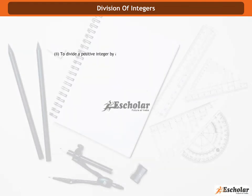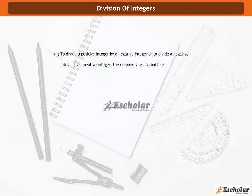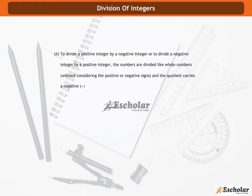To divide a positive integer by a negative integer, or to divide a negative integer by a positive integer, the numbers are divided like whole numbers without considering the positive or negative signs. And the quotient carries a negative sign.